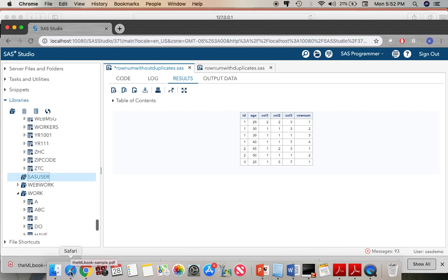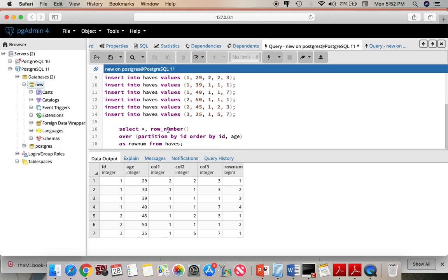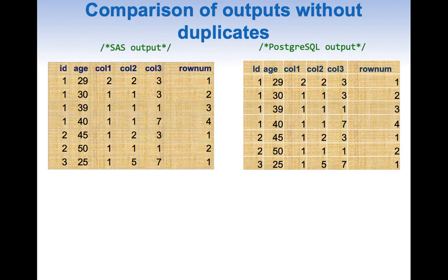Let us quickly look into the Postgres code too. We are using the row number function followed by partition by ID and order by ID clause. If we run the same code we will get exactly similar results. When ID is 1 and age is 29 we get row number 1. As the age increases the row number increases. Let us quickly compare these results. They exactly look similar. When we are comparing these outputs where there are no duplicates on sorting rows everything looks perfect. Let us get into something more interesting.